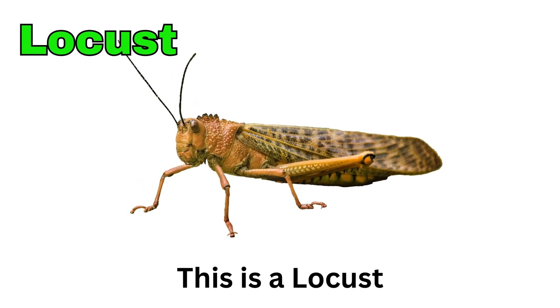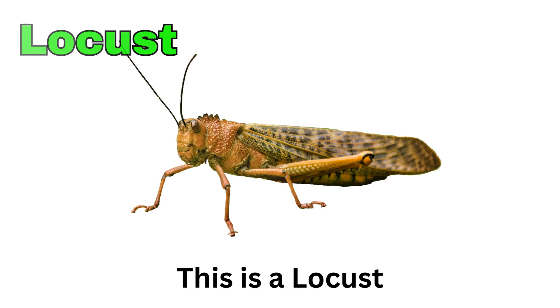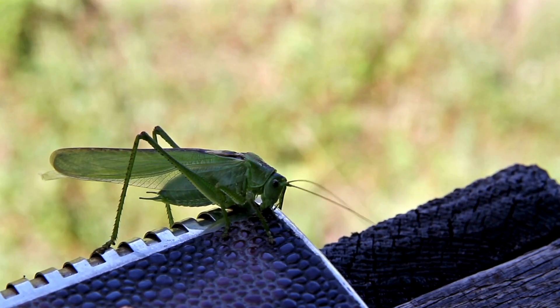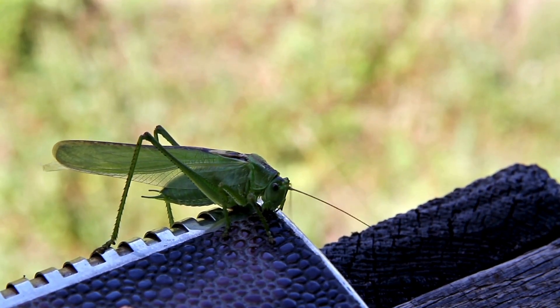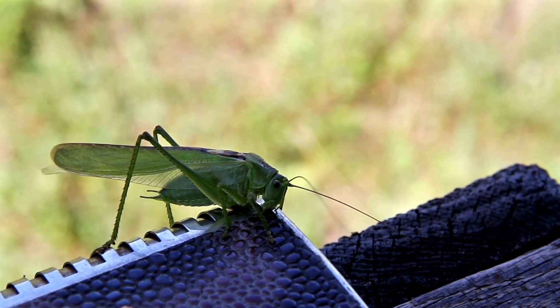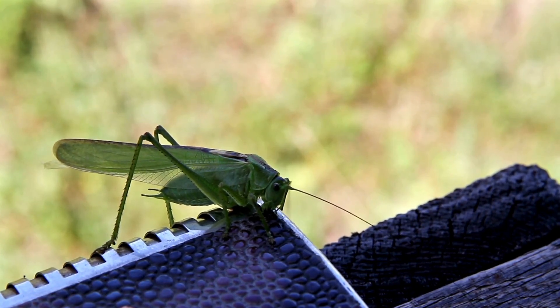Locust. This is a locust. It looks like a grasshopper but lives in big groups. Locusts can eat and destroy many plants very quickly.